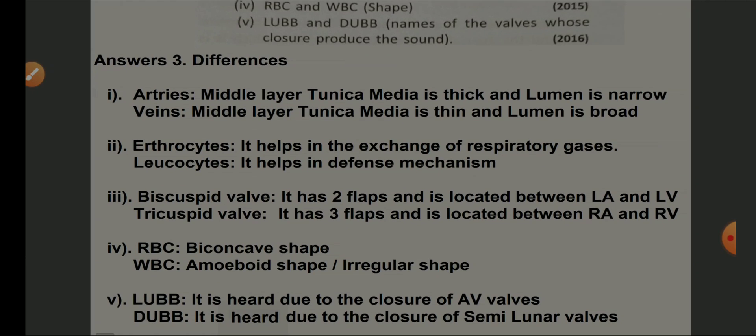Lub and dub: 'lub' is the first heart sound produced due to the closure of AV valves (tricuspid and bicuspid). 'Dub' is the second sound produced by the closure of semilunar valves. These are the differences between arteries and veins, erythrocytes and leukocytes, bicuspid and tricuspid valves, WBCs and RBCs, and lub and dub.